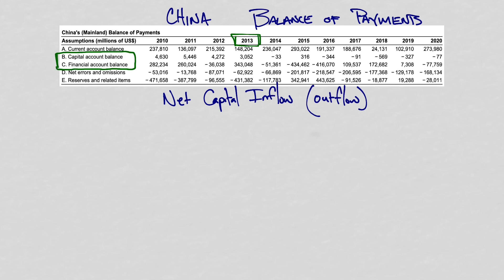These are the two financial categories for the balance of payments. The current account covers goods and services — physical stuff or services provided. But these other categories are financial products: stocks, bonds, money inflows to build a factory, financial investments, capital.